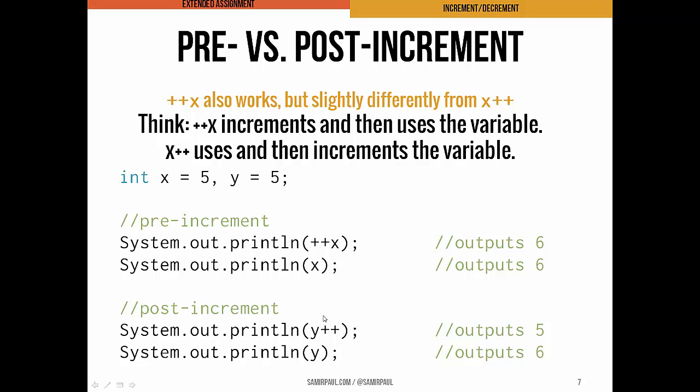If I use the post-increment, which is y plus plus, well, that's going to use my variable before incrementing it. So if I print this out, system.out.println y plus plus, that's going to print 5, which is the original value. Then after using it, it's going to increment. So I end up printing 6 in this second step where I just print y. Again, in most situations where you're going to realistically use these, it's not going to make a huge difference. Mostly it'll just be x plus plus by itself on a single line. But there is a distinction and I want you to know about it.